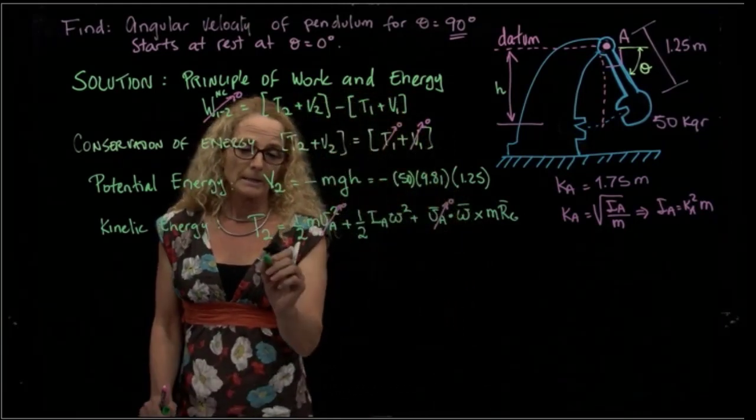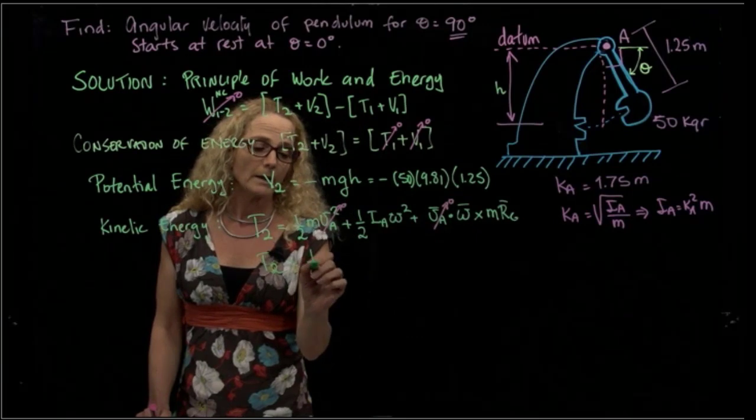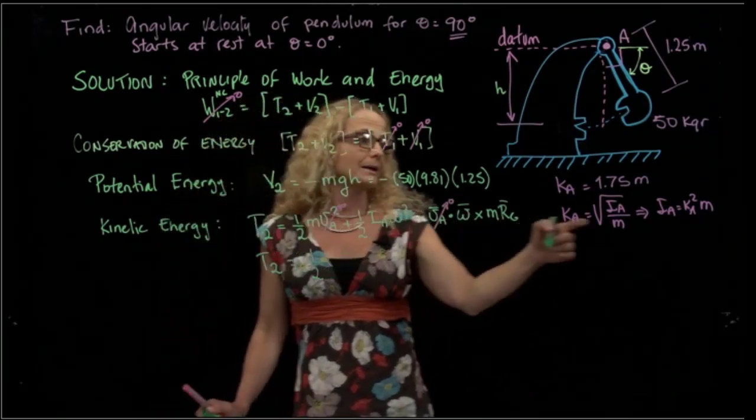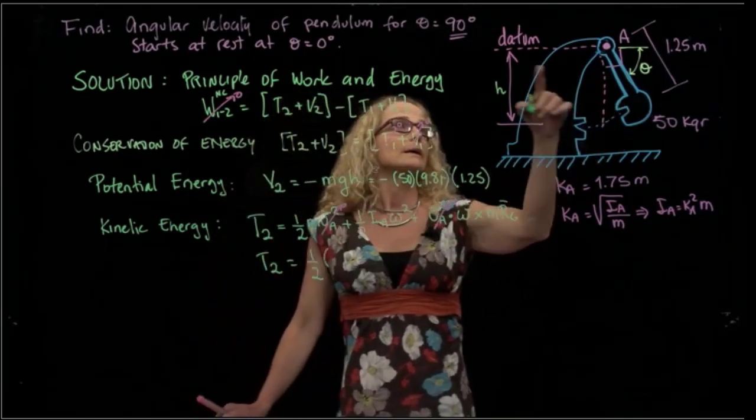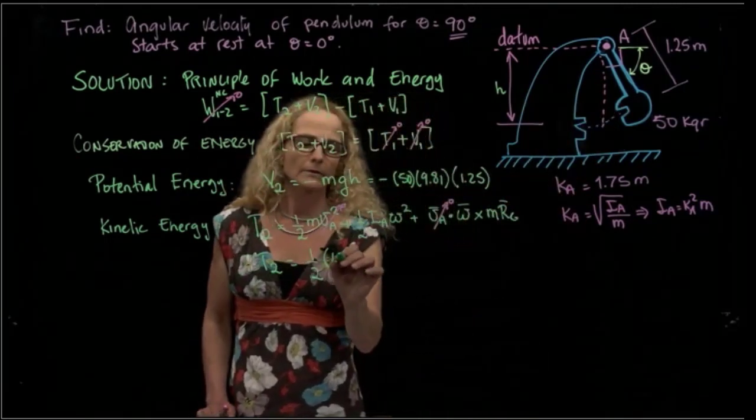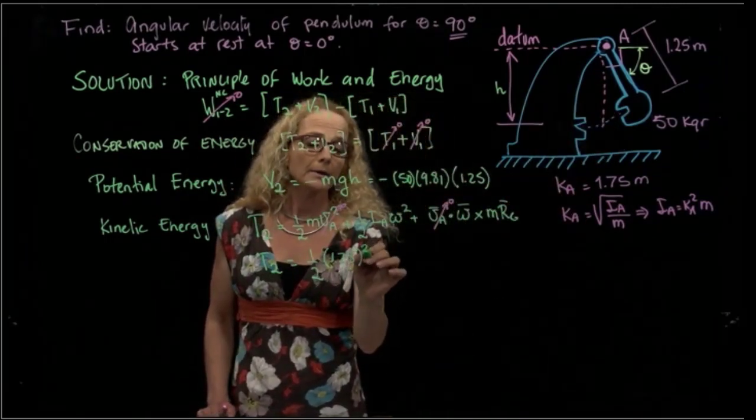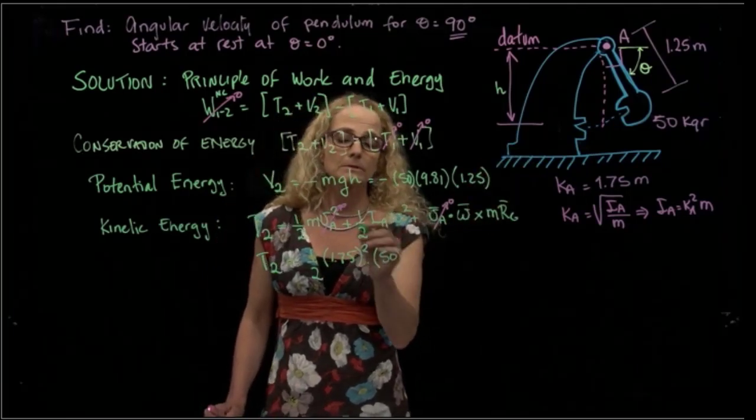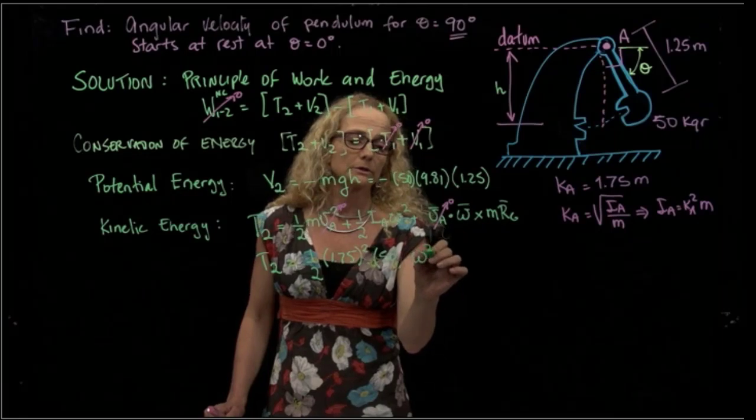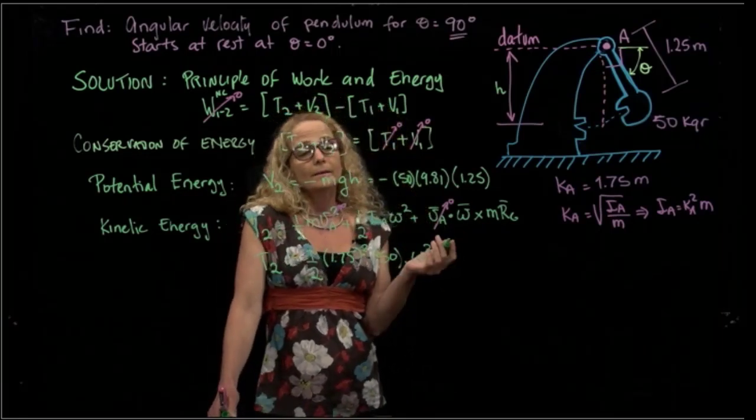So finally, the kinetic energy will be one-half the inertia, which we have is 1.75 squared times the mass, which is 50, times angular velocity squared, which is actually our unknown.